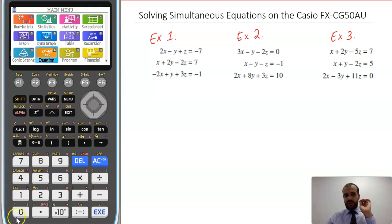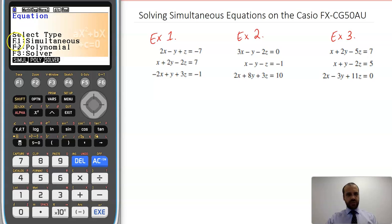So we're going to be solving simultaneous equations on your Casio calculator. Now I'm going to try to get through this really quickly. We're going to go down to the equation bit here, come down there. And we're going to do a simultaneous equation, so F1.